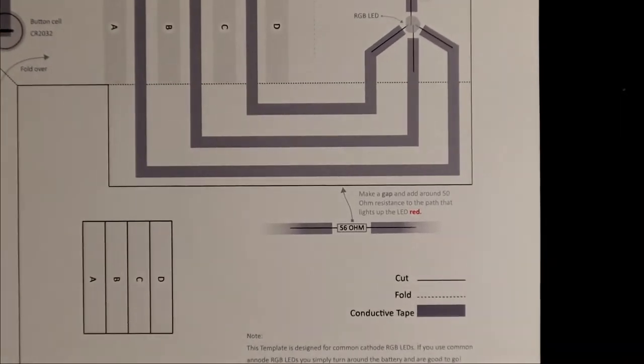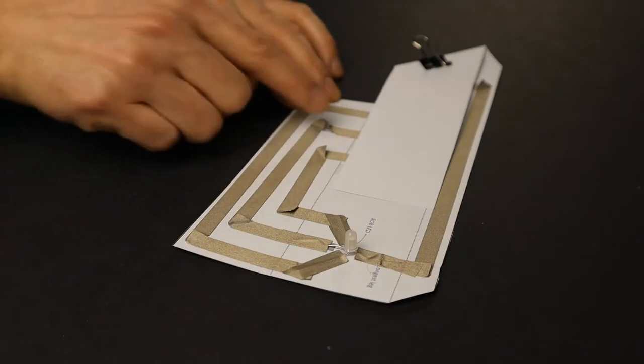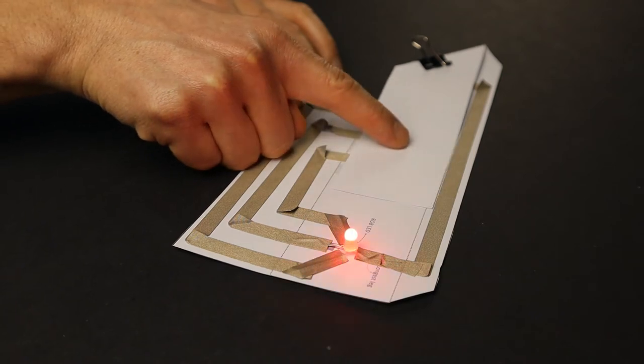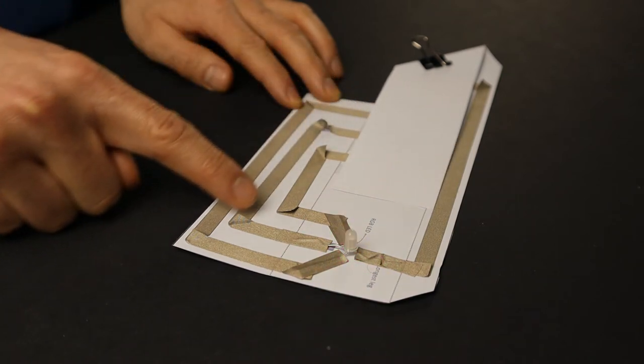The template mentions to add a resistor to the red track of the LED. To achieve this, we first need to find the red track and then put a small resistor in front of the LED.